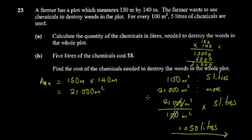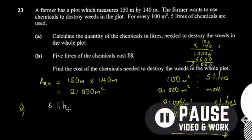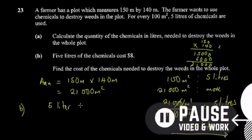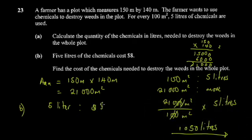Let's answer part b. Part b says: 5 liters of chemicals cost $8. Find the cost of the chemicals needed to destroy the whole plot. Again we use simple proportion: 5 liters costs $8, and we want to know the cost of 1,050 liters.